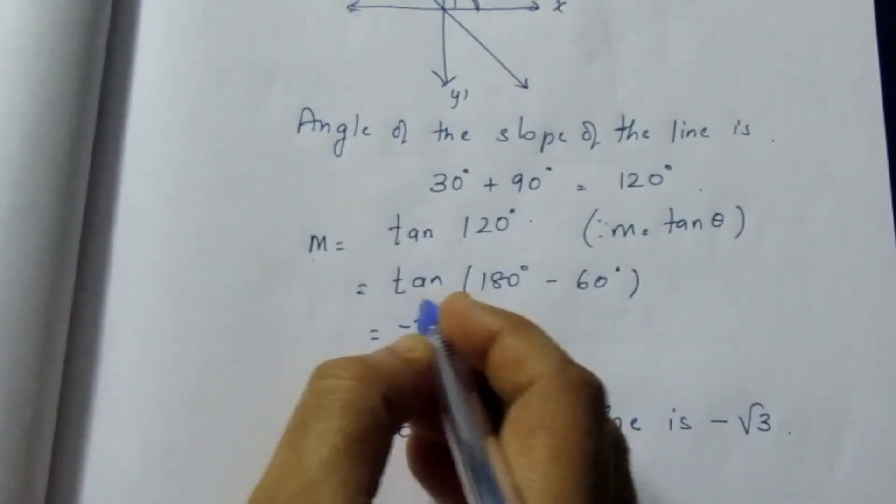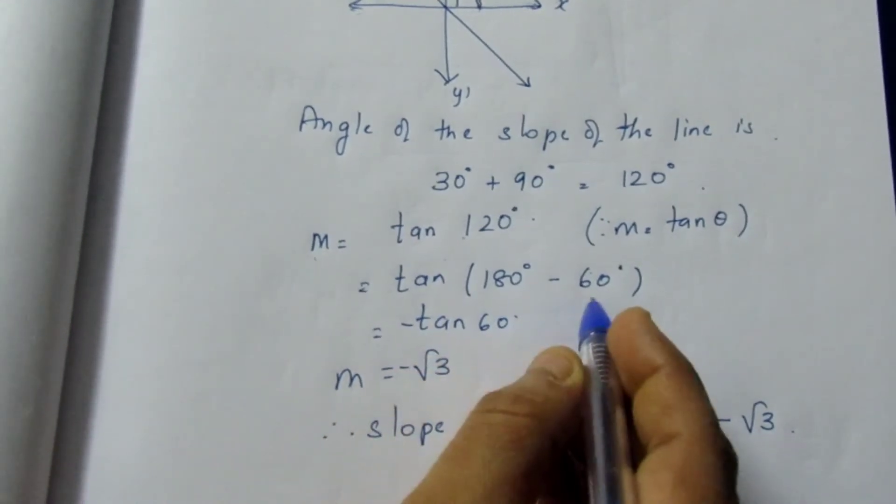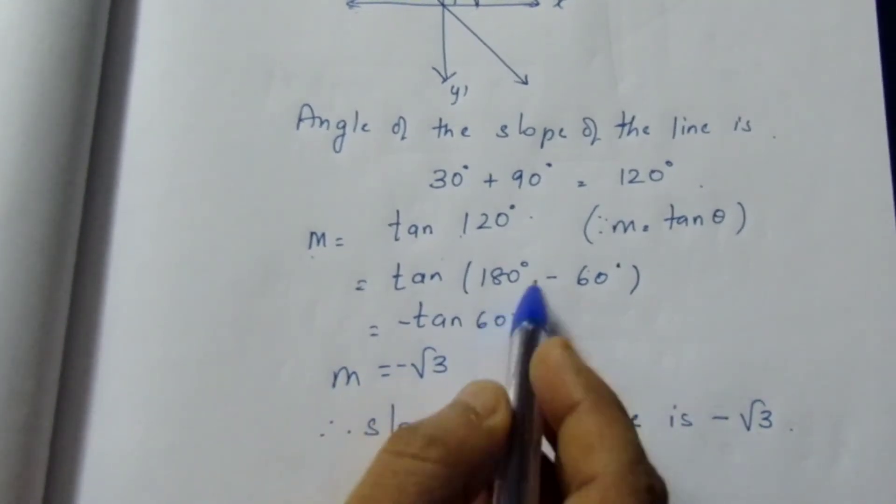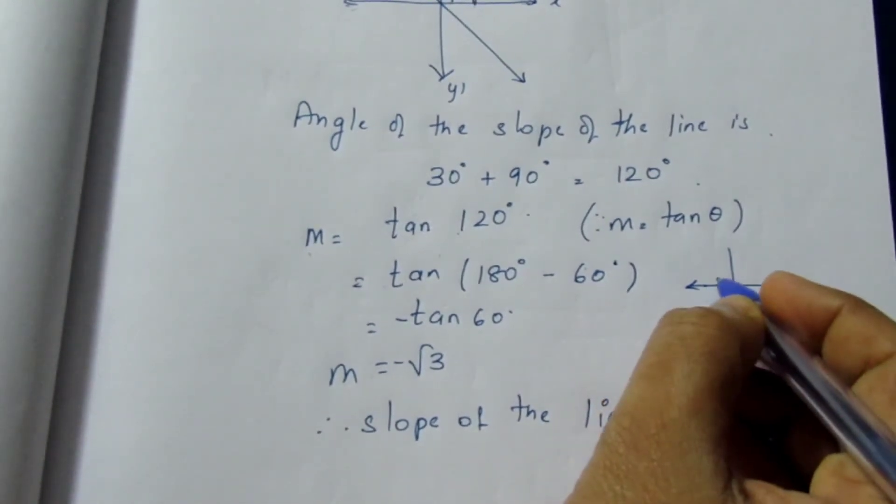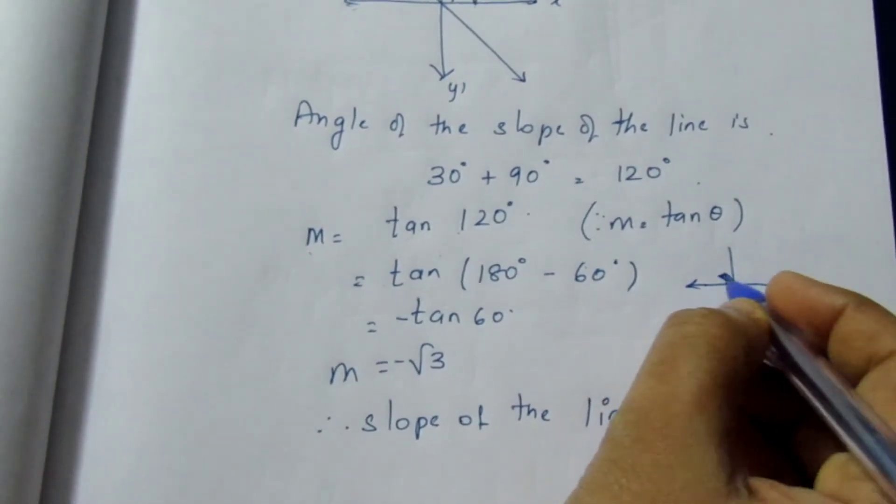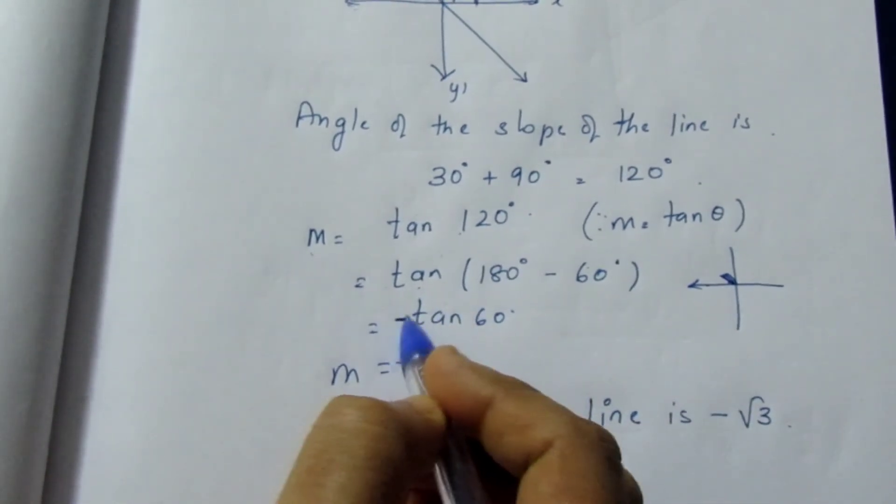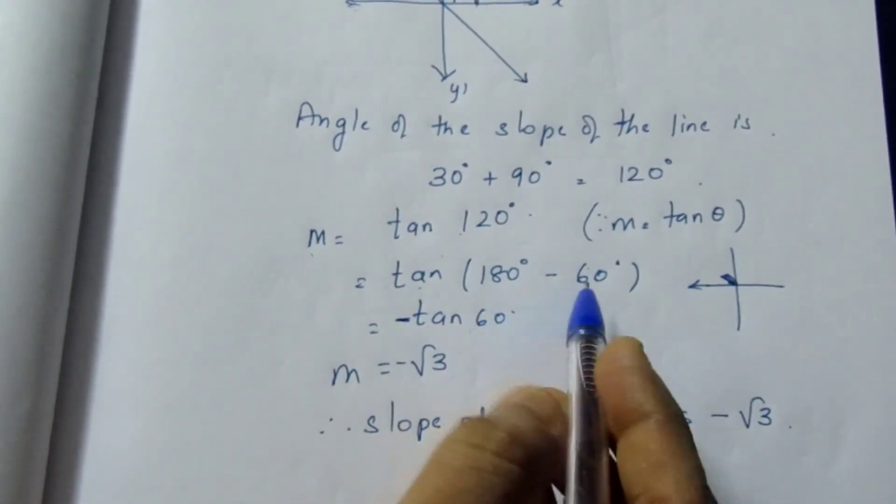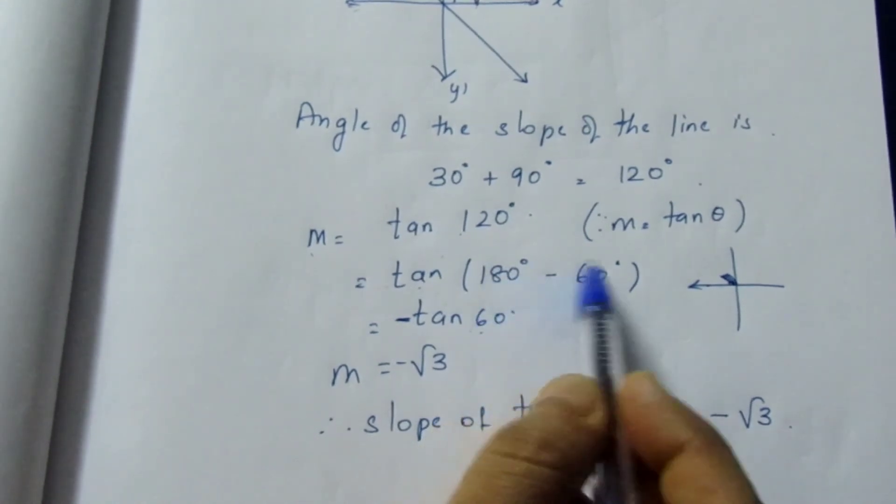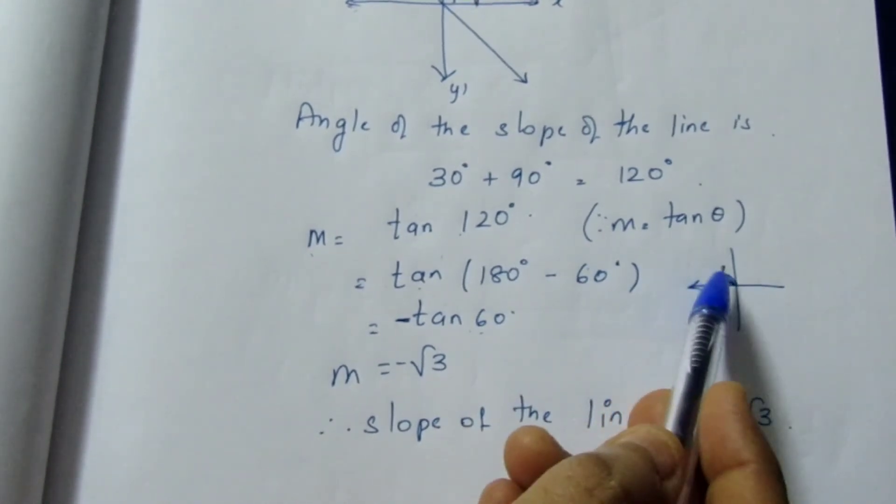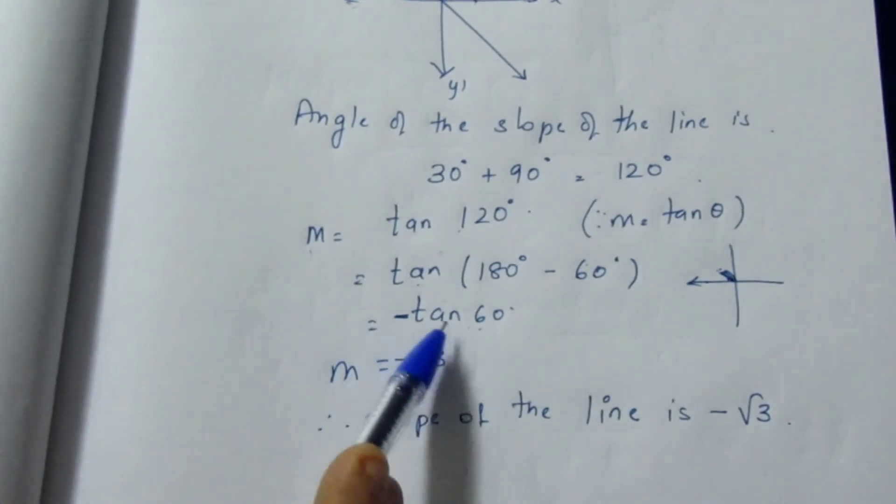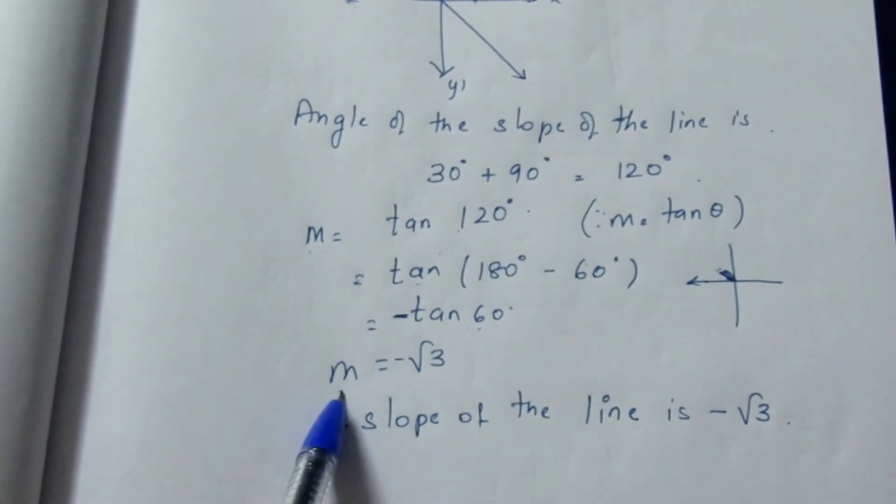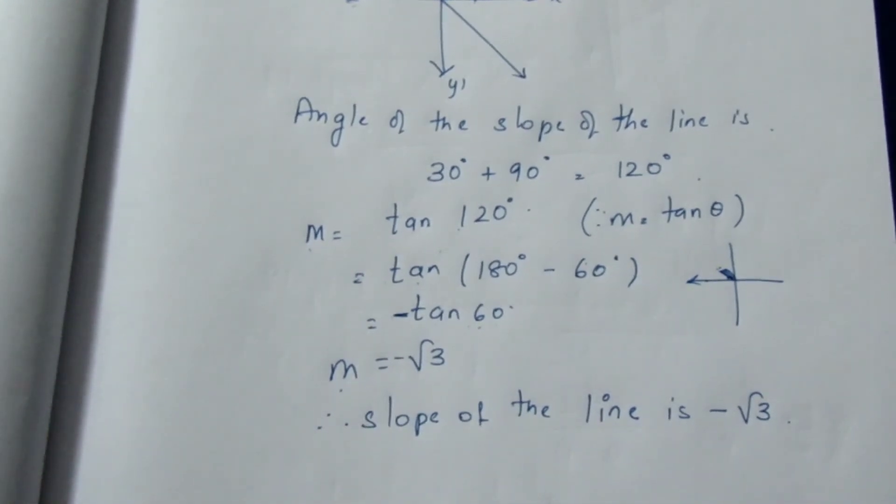Now this becomes tan 180 minus 60 will become minus tan 60. Here 180 minus brings us to the second quadrant. Second quadrant tan is negative, so minus tan 60. We need to consider both the value as well as the sign where it lies. It lies in the second quadrant. Second quadrant tan is negative, so minus tan 60 is root 3, giving us minus root 3. So slope of the line is minus root 3. That's all with the sum.